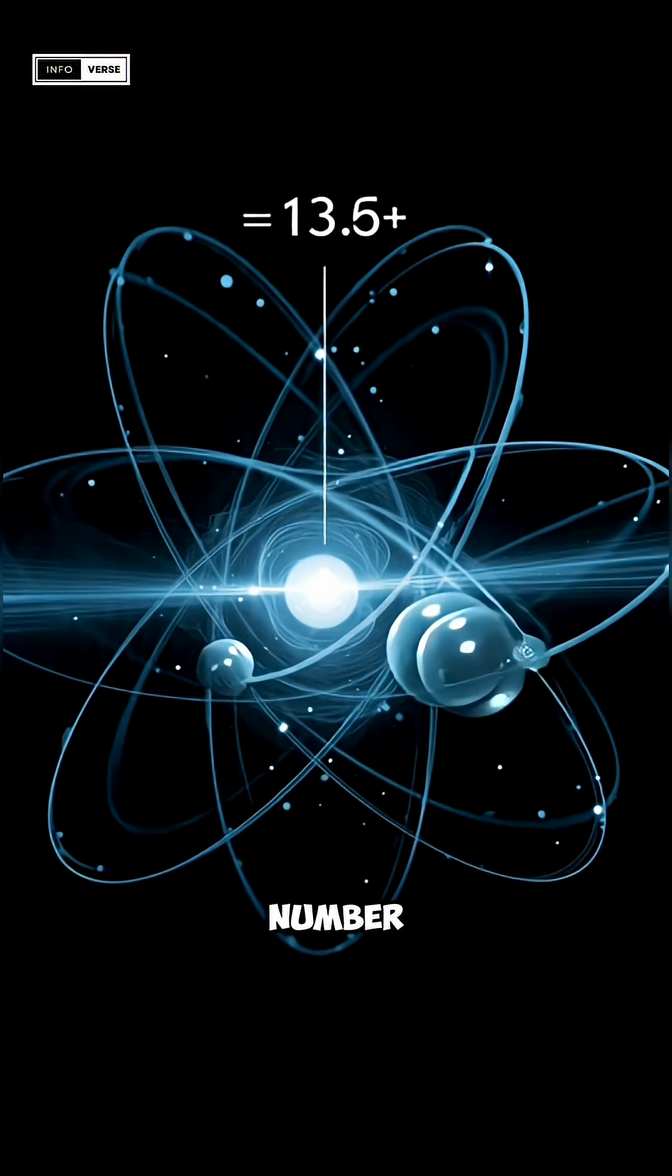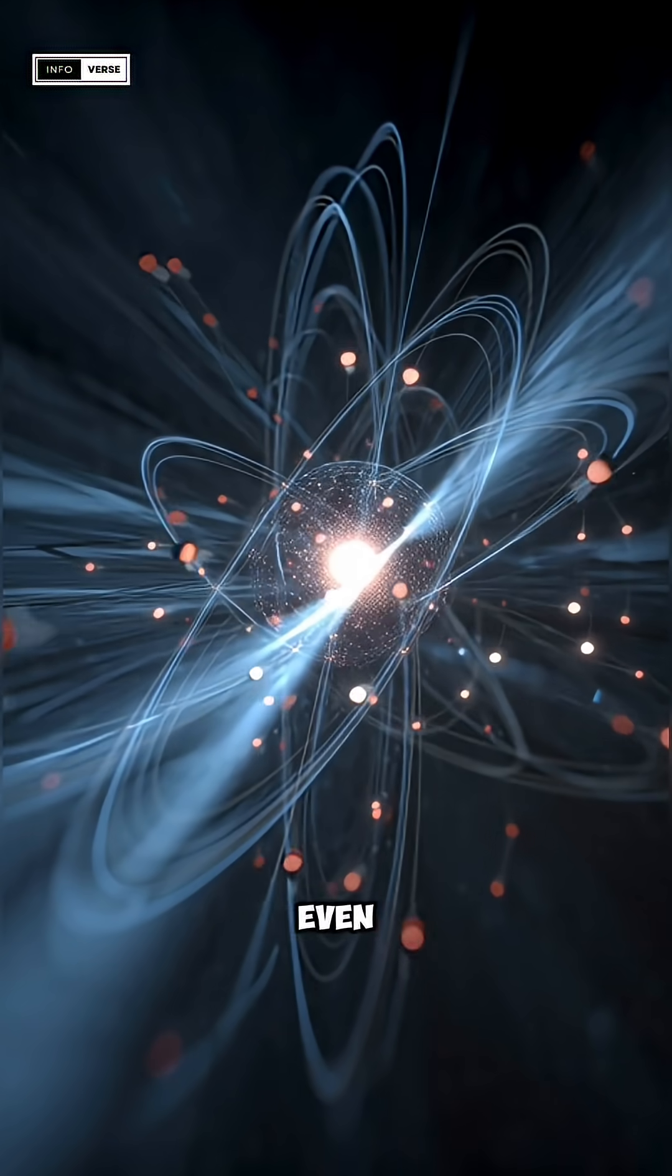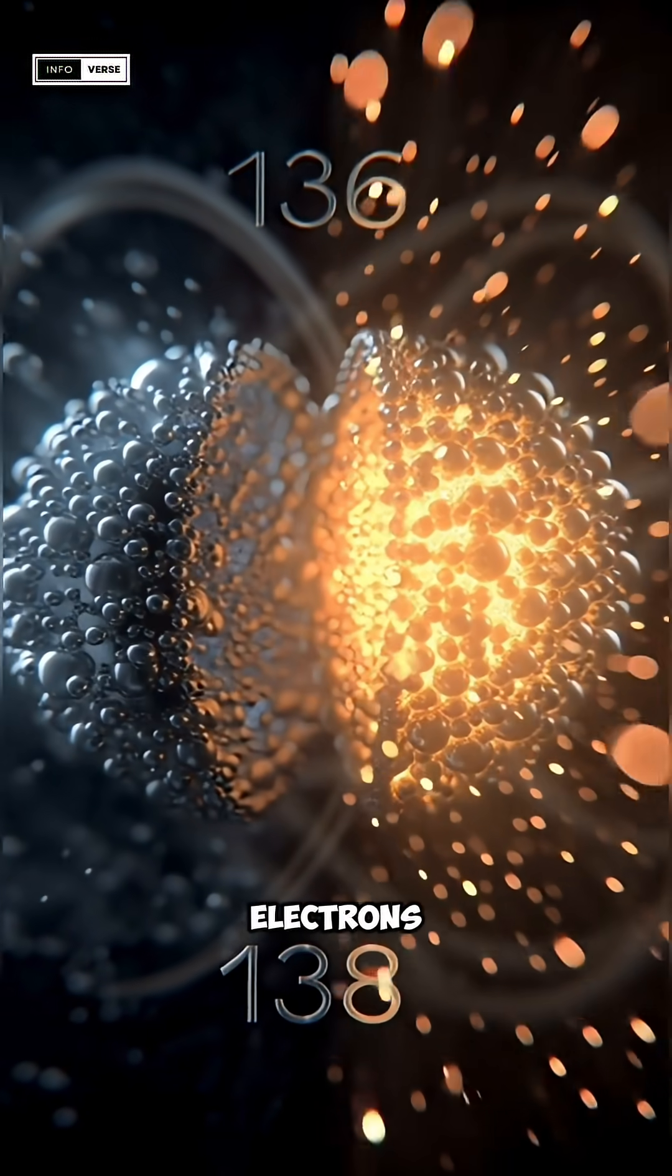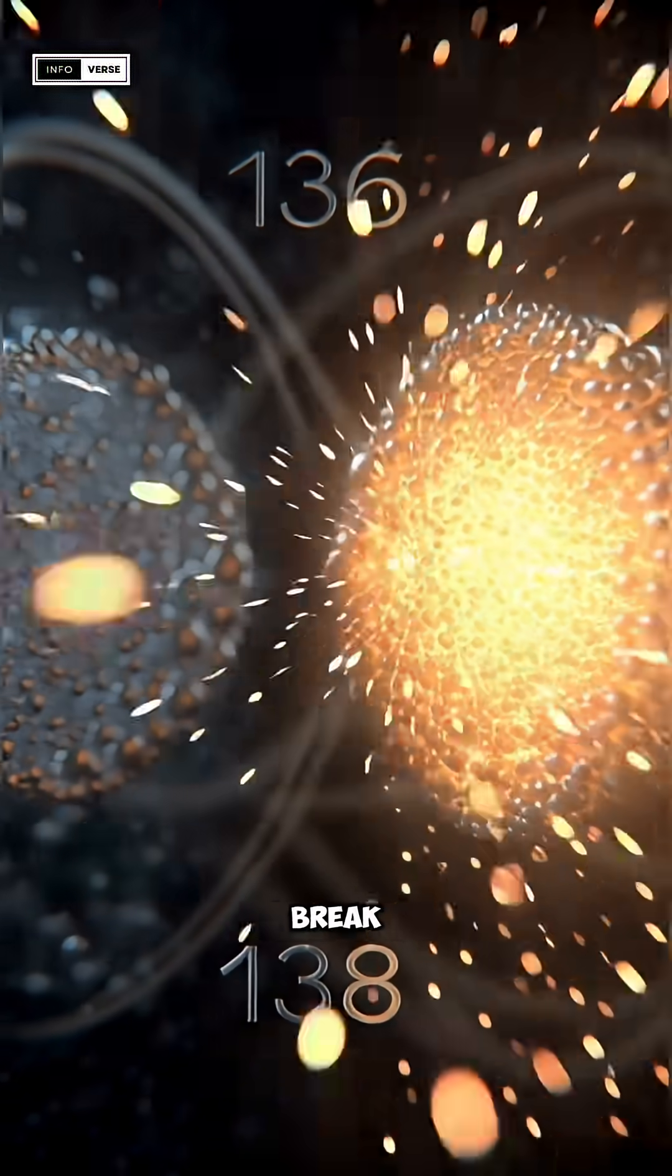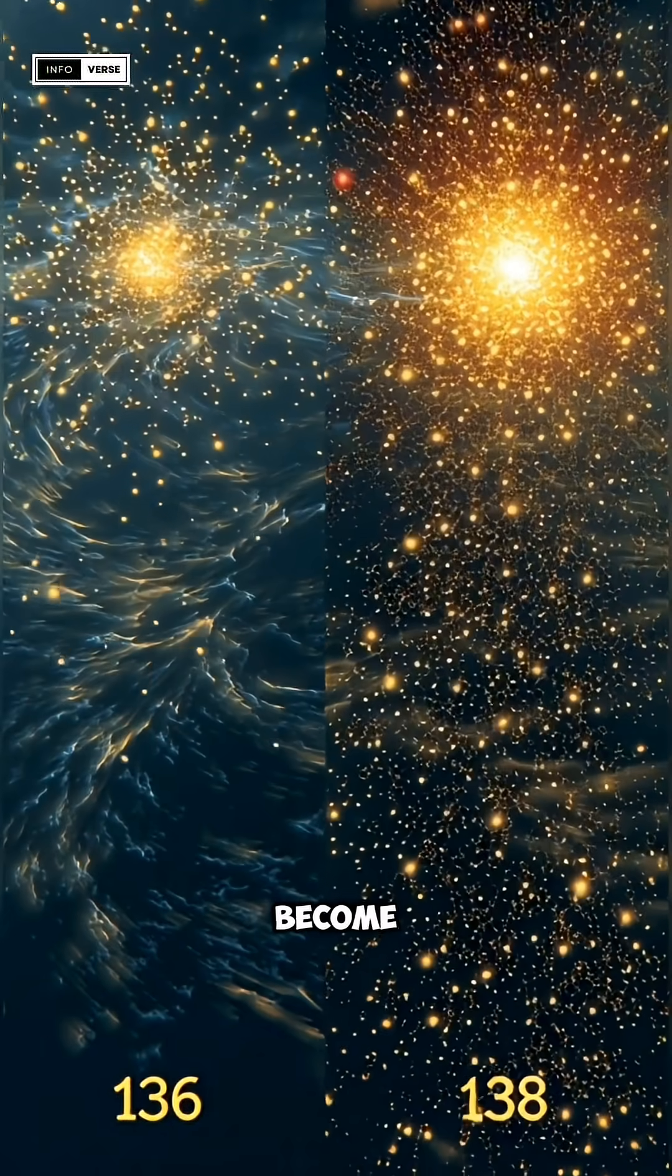In simple terms, this number determines whether atoms can exist at all. If it shifted even slightly to 136 or 138, electrons would fly apart, atoms would break down, stars couldn't ignite, and the entire universe would become uninhabitable.